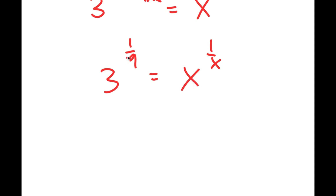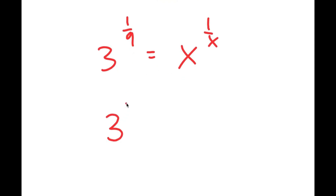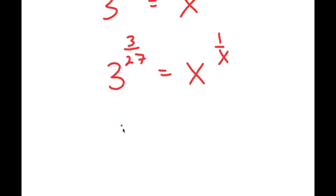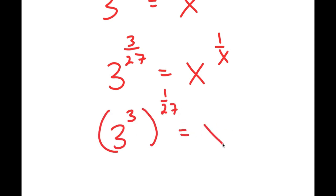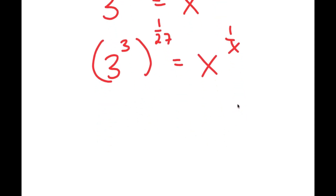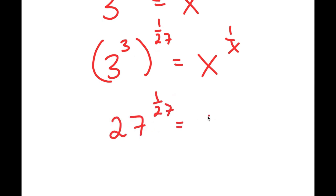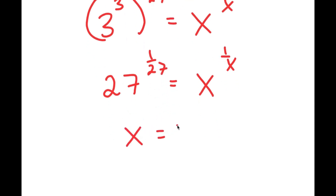Now 1 over 9 is the same thing as 3 over 27, so I can rewrite 3 to the power of 1 over 9 as 3 to the power of 3 to the power of 1 over 27, which equals x to the power of 1 over x. And 3 to the power of 3 equals 27, so I get 27 to the power of 1 over 27 equals x to the power of 1 over x. Since both sides are in the form a to the power of 1 over a, x equals 27.